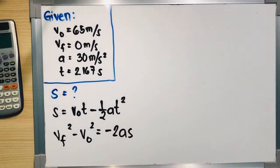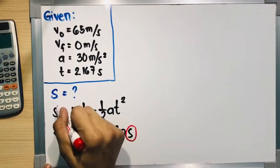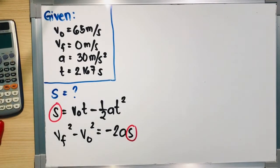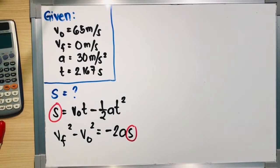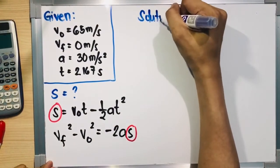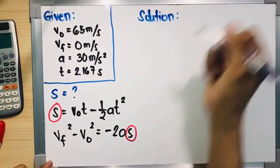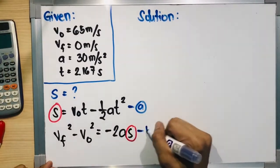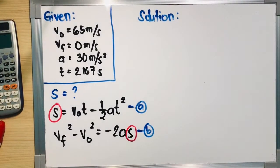Both equations are applicable to solve for the distance because both of them have the distance equation. So let's solve using both equations and find out if our answers will match. Let's use the blue pen for the solution. Let's use this as letter A and this as letter B.